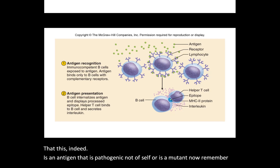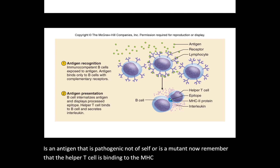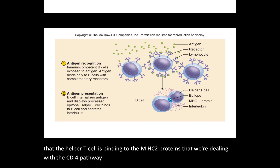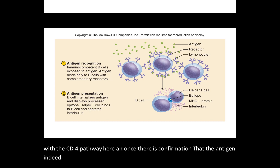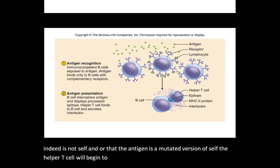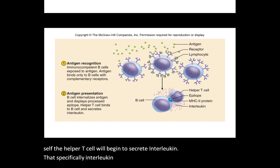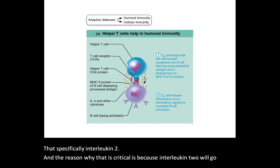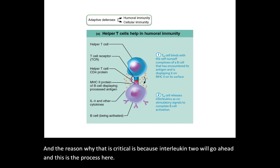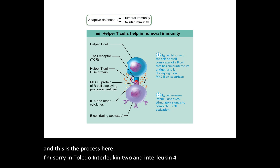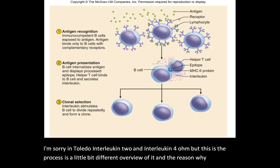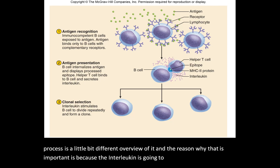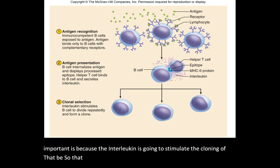Remember that the helper T cell is binding to the MHC2 protein, so we're dealing with the CD4 pathway here. Once there is confirmation that the antigen indeed is not self, or that the antigen is a mutated version of self, the helper T cell will begin to secrete interleukin — specifically interleukin-2 and interleukin-4. This is critical because the interleukin is going to stimulate the cloning of that B cell. That B cell is now specific for an antigen, and we're going to clone that B cell that is specific for that antigen.